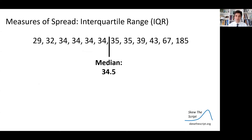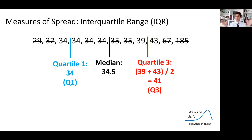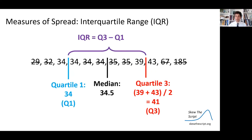Here's the formal formula for standard deviation. Another measure of spread is the interquartile range (IQR). Take the median and then find the medians of the lower and upper halves of the data separately. The median of the lower half is quartile one (Q1) — in this case, 34. The median of the upper half is quartile three (Q3) — found by taking the midpoint of 39 and 43, which is 41. The IQR is Q3 minus Q1: 41 minus 34 equals 7, representing $7,000.